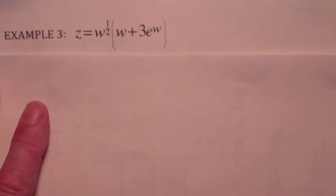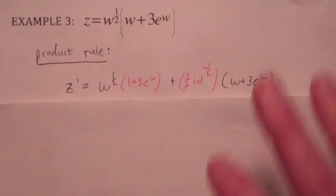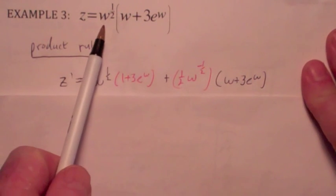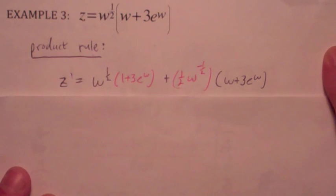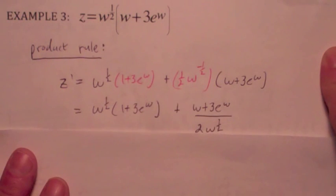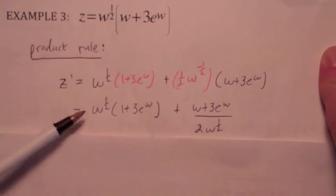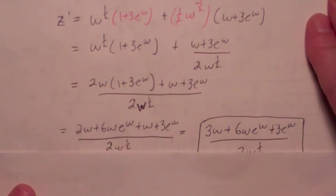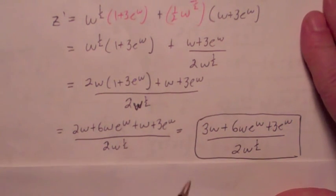Let's do another one. Here you have to decide: should we multiply this out or apply the product rule directly? I'm going to use the product rule, which gives the first function times the derivative of the second — which gives 1 plus 3e to the w — plus the derivative of the first, which becomes 1 half w to the negative 1 half, keeping the second function fixed. When you simplify, move the negative exponent down, get a common denominator by multiplying by 2w to the 1 half, giving 2w on top. Carefully multiply out the numerator and combine like terms, and the final answer is 3w plus 6we to the w plus 3e to the w, all over 2w to the 1 half.